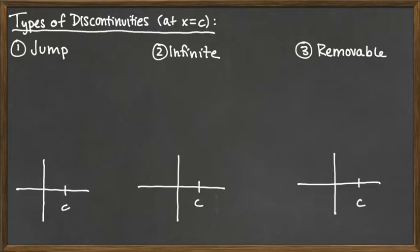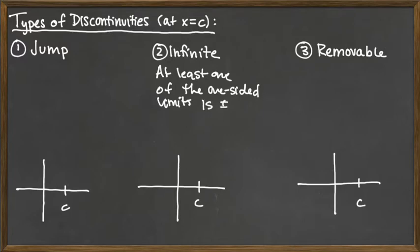When I'm looking at these three types of discontinuities, I actually check to see if it's the second one first. Is it an infinite discontinuity? Because what I'm looking for for an infinite discontinuity is at least one of the one-sided limits is plus or minus infinity. So we'll write that at least one of the one-sided limits is infinite, is plus or minus infinity.